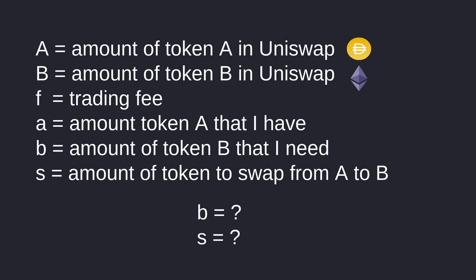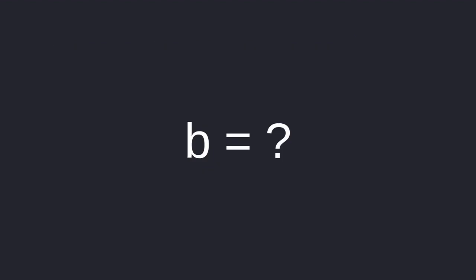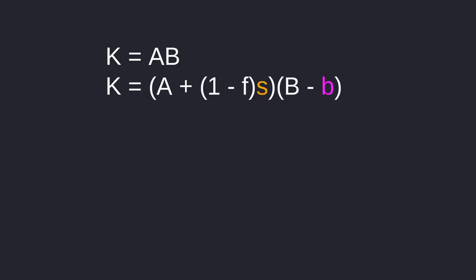If we know S, b is not that hard to find out. So let's figure out what b is in terms of S. We know that K is equal to A times B — the amount of token A and the amount of token B inside Uniswap must equal a constant K. And after the swap, this constant must remain the same. We can express the amount of token A and the amount of token B inside Uniswap after the swap using this equation.